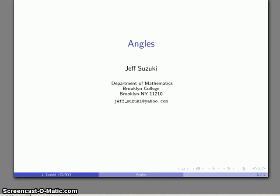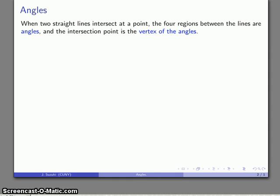The next major geometric topic is angles. If I have two straight lines that intersect at a point, then what I form with those two straight lines are a set of angles. And the point of intersection of those lines is the vertex of the angle.